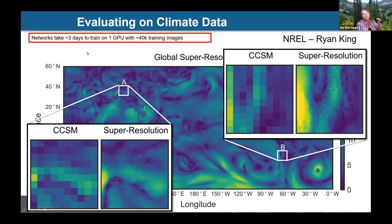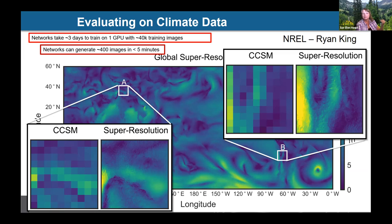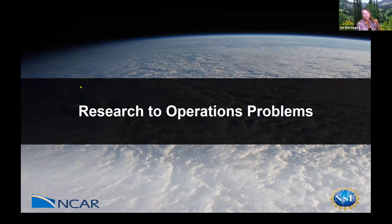With about 40,000 training images from CCSM, it took about three days to train on one GPU. But once trained, you can generate about 400 images in less than five minutes — a real improvement over running high-resolution models. Both their research group and ours are now going the next step: if we have mesoscale data, can we get large-eddy simulation scale data? First results are looking very promising on that as well.